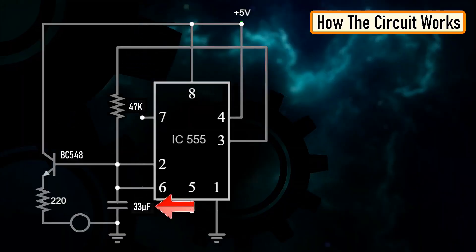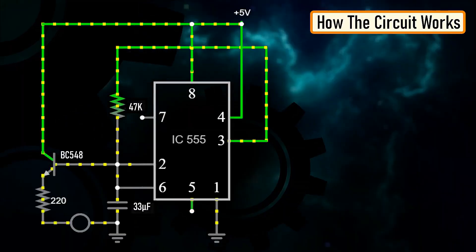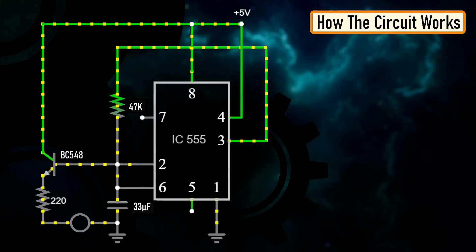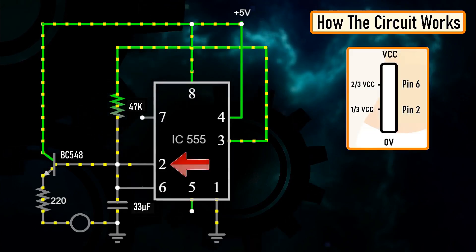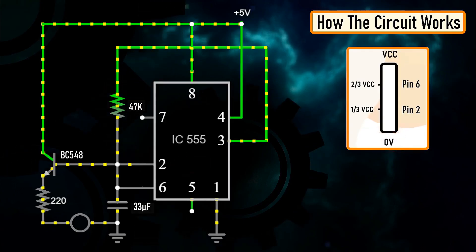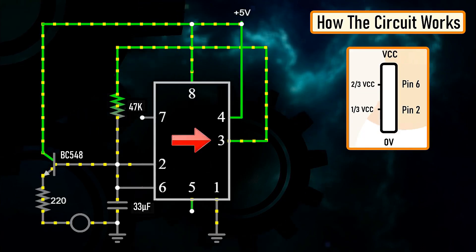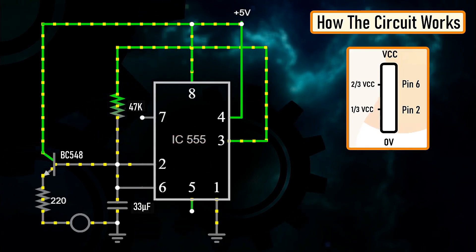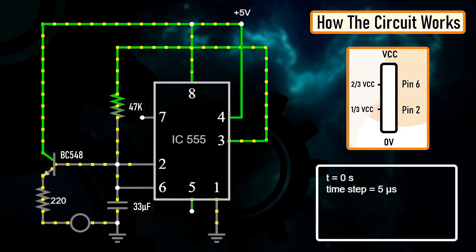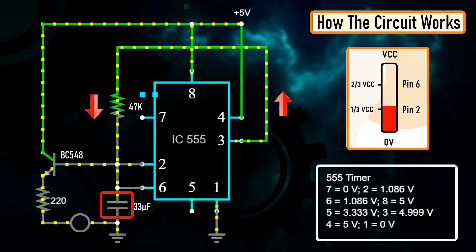The capacitor attached to the circuit will be in discharge state immediately after firing up the circuit. So, the voltage at pin number 2 will be 0 volts which is less than one-third of the supply voltage. This will turn on the output on pin number 3. Since pin number 3 is looped back to pin number 2, it will start charging the capacitor via the 47 kilohm resistor.